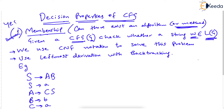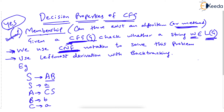The answer is yes — we can solve the membership problem of CFG. What we will do is use Chomsky Normal Form. Instead of pure CFG, we will use CNF, where the right-hand side can be exactly two non-terminals, or the right-hand side can be a single terminal.